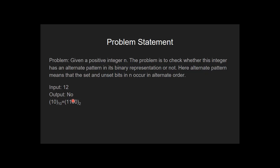Let's take another example. If input is 12, the output is no, because if we look at the binary representation of 12, zeros and ones are not in alternate position, so the output is no.